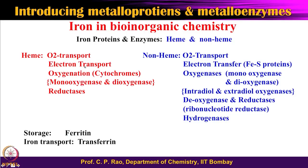Look at heme proteins — they can do oxygen transport, electron transport, oxygenation, reduction, and many kinds of oxidations and reductions. Look at non-heme proteins where there is no heme — they can do transport, electron transfer, oxygenase, deoxygenase, reductase, hydrogenase — a huge variety of functions. In the iron case, we also have ferritin, which is an iron storage protein, and transferrin, which is an iron transport protein. I think we will start with transport systems first.